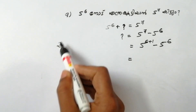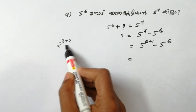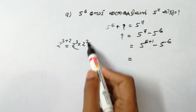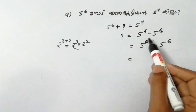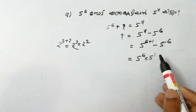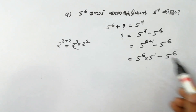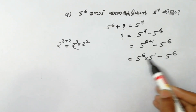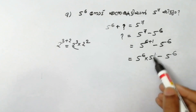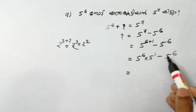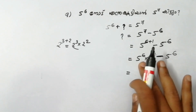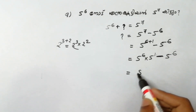How do I do this? 2 raised to 3 plus 2 equals 2 raised to 3 multiplied by 2 raised to 2. Using the multiplication rule, I add power 2. So 5 raised to 6, I raise my reply: 5 raised to 6 into 5 raised to 1, minus 5 raised to 6. I take out 5 raised to 6 as common.